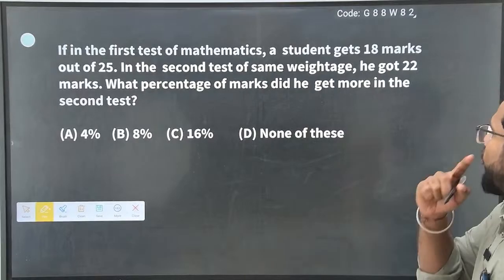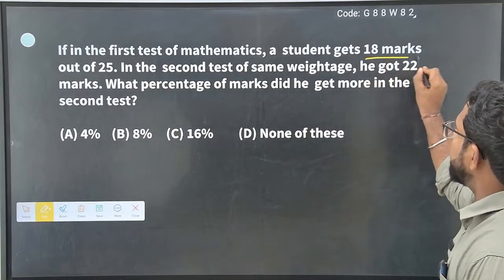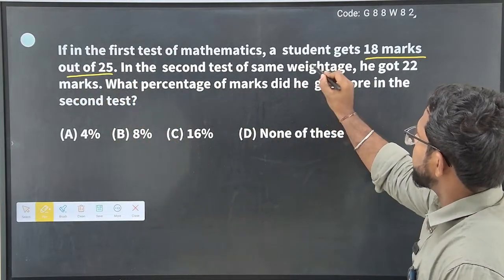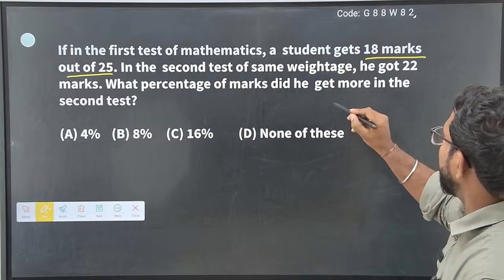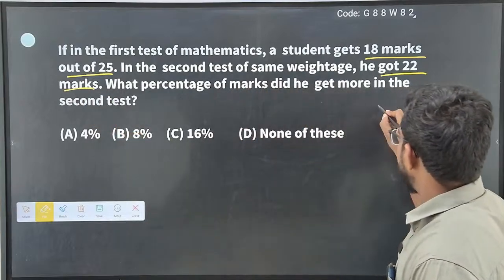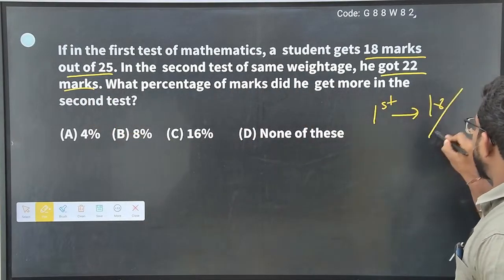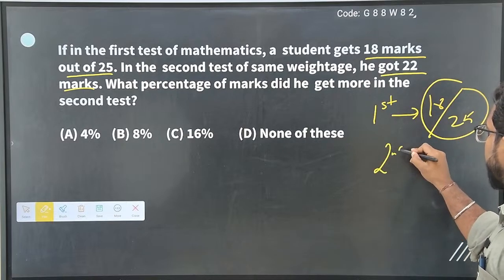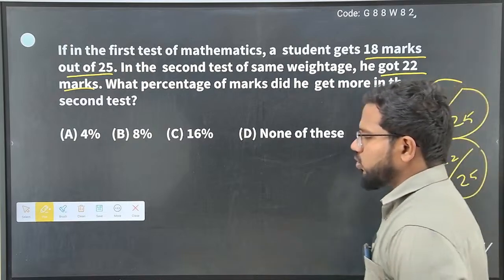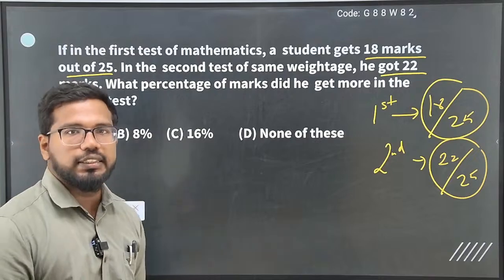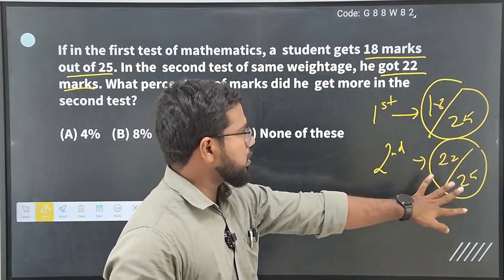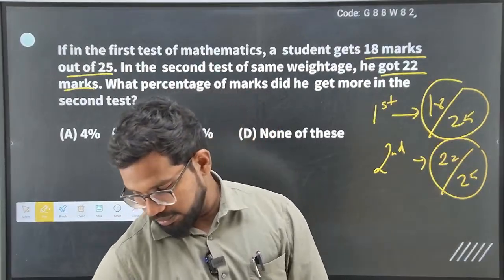If in the first test of mathematics, a student gets 18 marks out of 25. In the second test of mathematics of the same weightage, which means another 25 marks in total, he is getting 4 marks improvement. 22 marks score. So, first time, 18 out of 25. Second time, 22 out of 25. The question says 4 marks improvement, you will say 4 marks improvement. But in the question, you will get the percentage of the same weightage. Percentage of the same weightage. So, what do you say? First, you will calculate the percentage for each, then subtract. Okay.